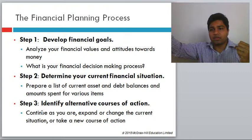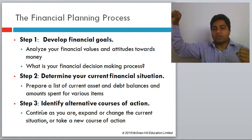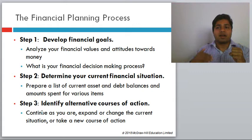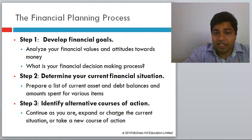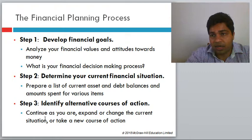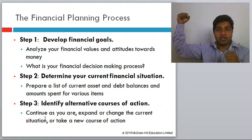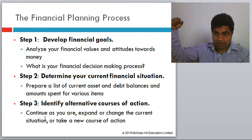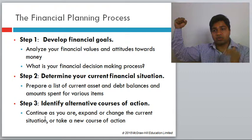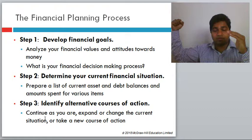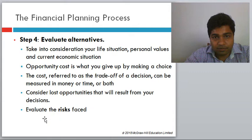Step three is to identify alternative courses of action — the different paths from your current situation to your financial goals. Alternatives include: continuing as you are, expanding or changing your current situation, or taking a new course of action. For example, if your current saving rate will achieve your goal, that's fine. But if you need to save more or adjust your spending, those become different courses of action.